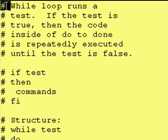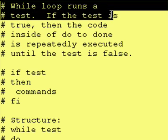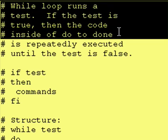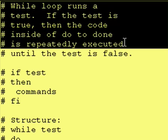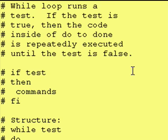To summarize, the while loop runs a test. If the test is true, then the code inside of do to done is repeatedly executed until the test is false, otherwise it just skips over that stuff, all of those commands between the do to the done. Let's take a look at two examples.